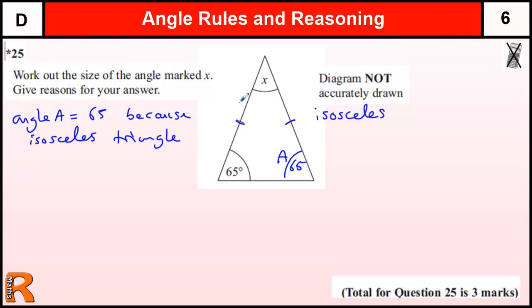And then from there, angles in a triangle add up to 180. So X plus 65 plus 65 equals 180. So X plus 130 is 180. So X equals 50.